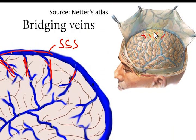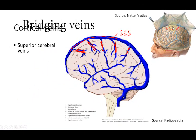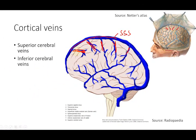Bridging veins are very important for causing subdural hemorrhage. Next are the inferior cerebral veins, which you can see here. These inferior cerebral veins are draining into the transverse sinus as well as the sigmoid sinus, so they drain directly there.